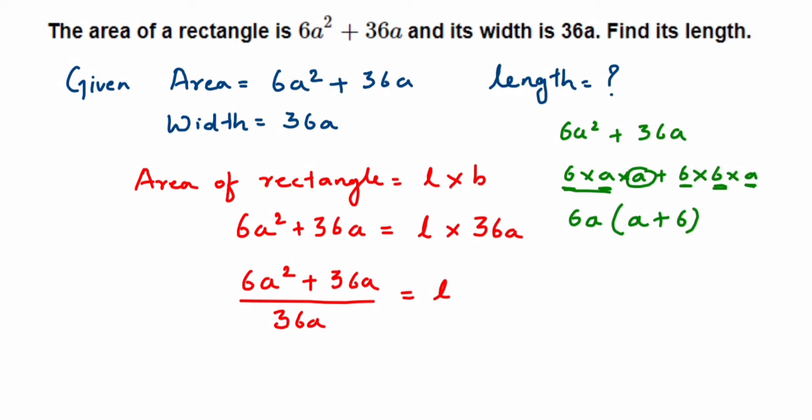If we factorize, so I'm going to write it in here. This is equal to—so in place of 6a² + 36a, I'm going to write down 6a(a + 6) / 36a. I hope you understood how I have written 6a(a + 6).